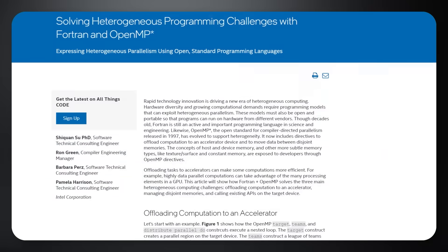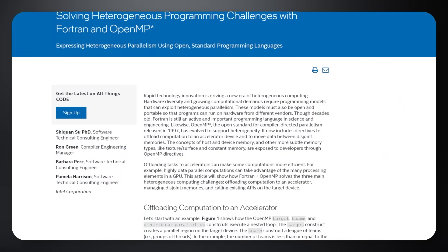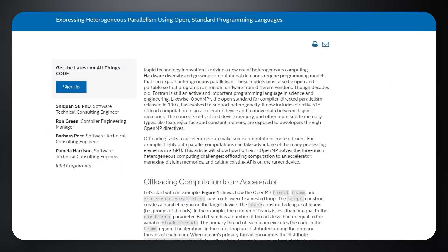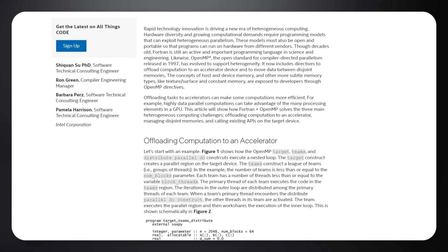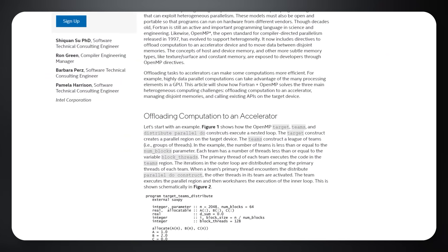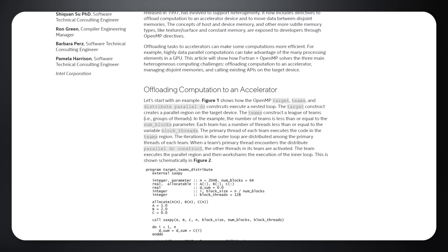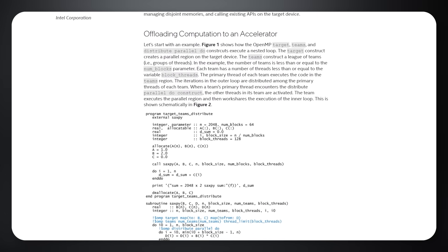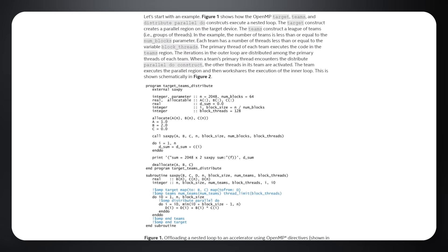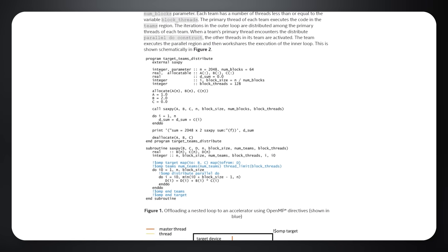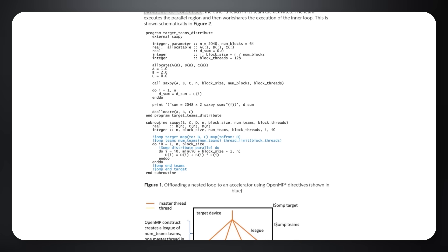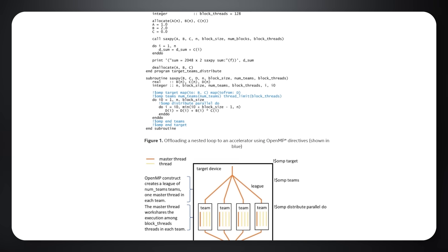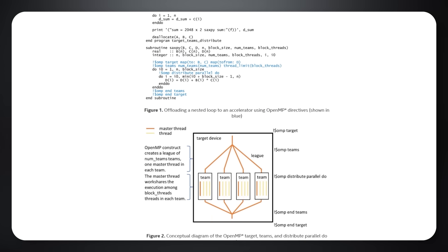The article goes on to explore how, though it's decades old, Fortran remains an active and important programming language. Similarly, OpenMP, the standard for compiler-directed parallelism released in 1997, has evolved to support heterogeneity.